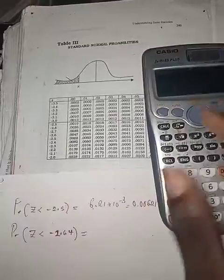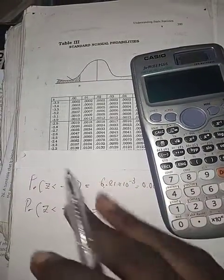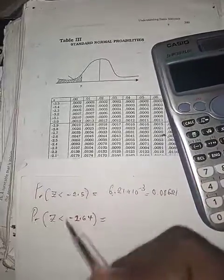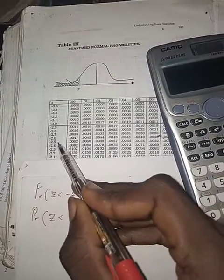That's how to use the calculator, the Casio FX 991ES Plus. For minus 2.64, the same thing applies. Minus 2.6 under 4, that's what minus 2.64 means.